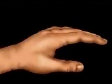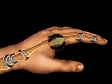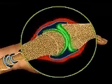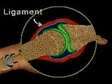Arthritis is a condition in which the structure and function of the joints is impaired. The word arthritis means joint inflammation.